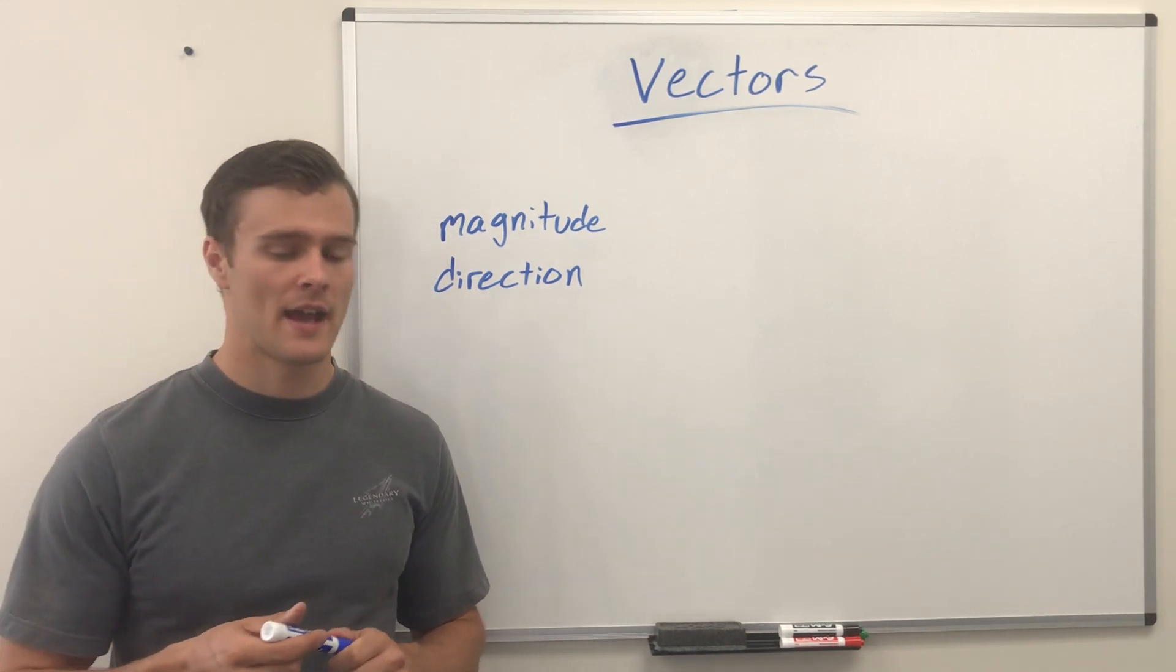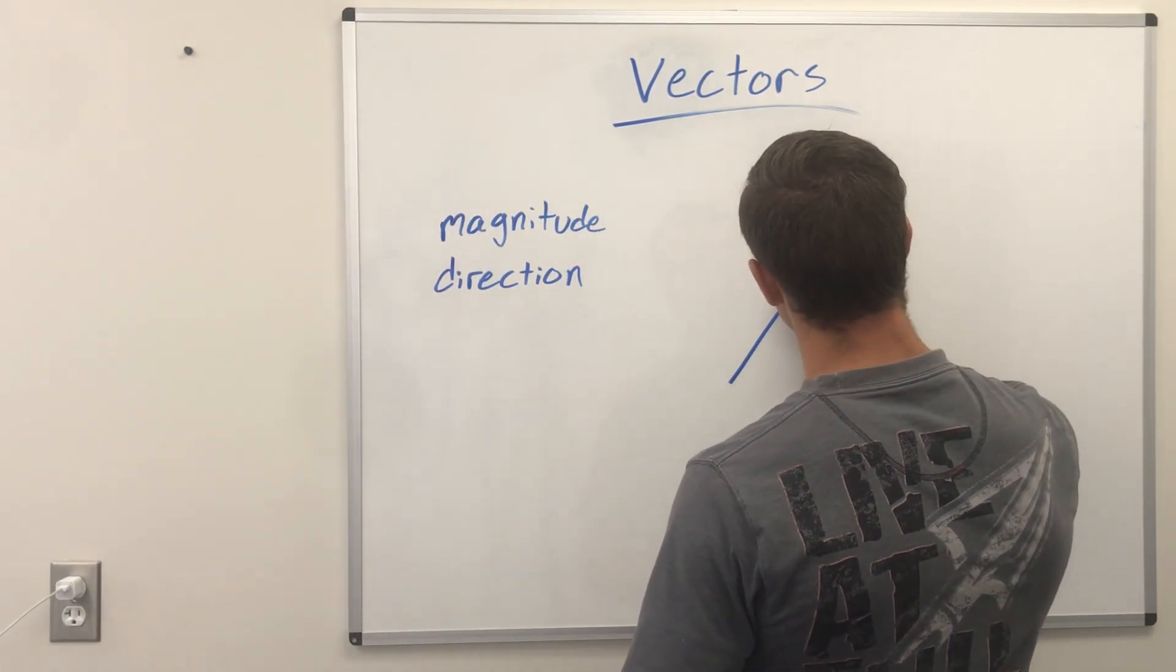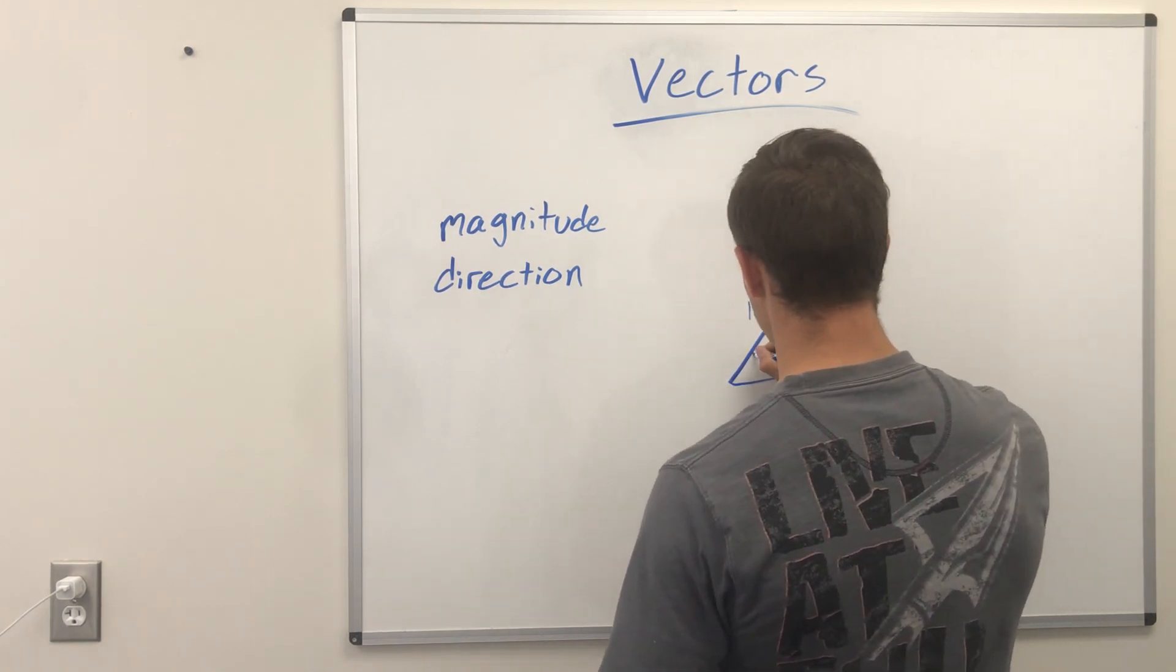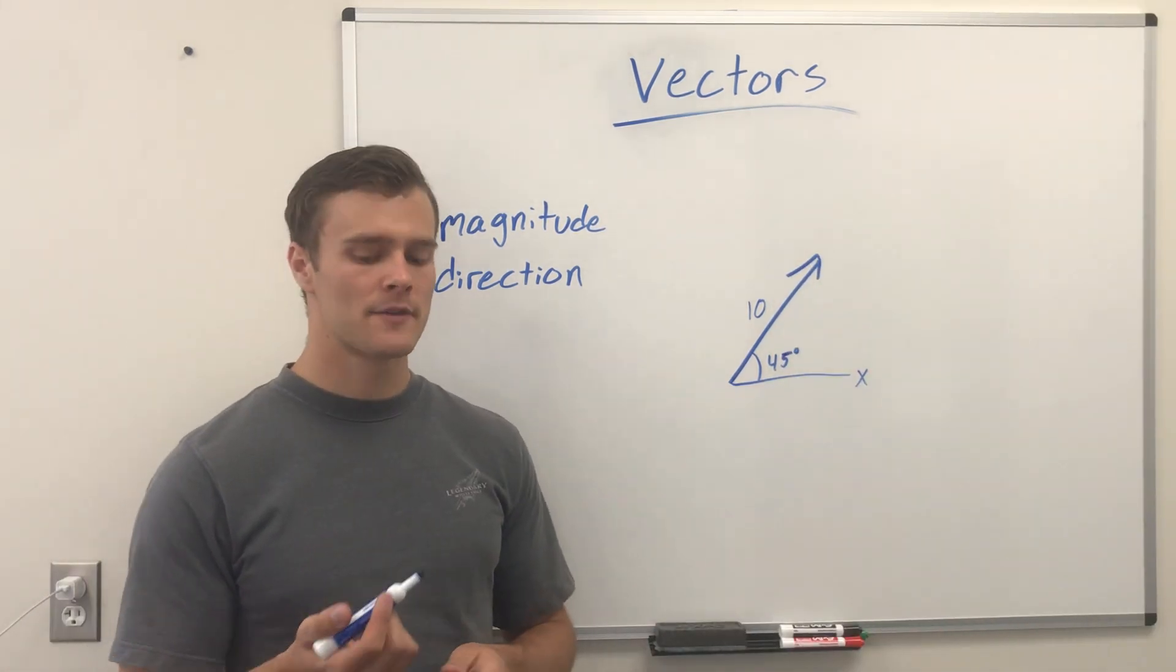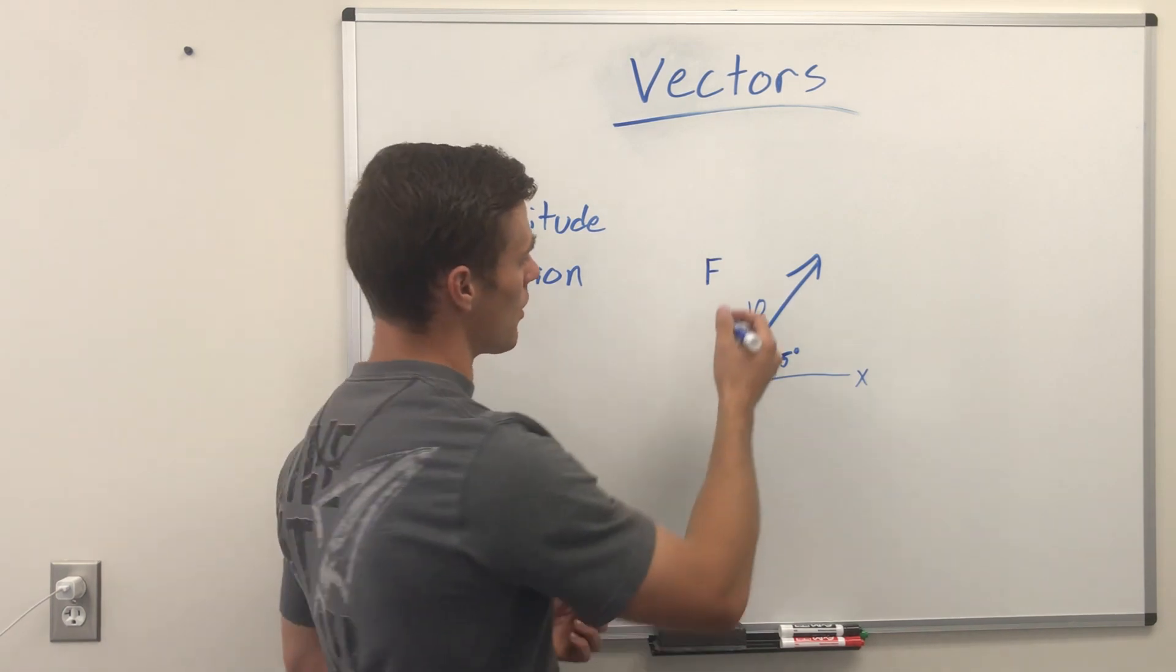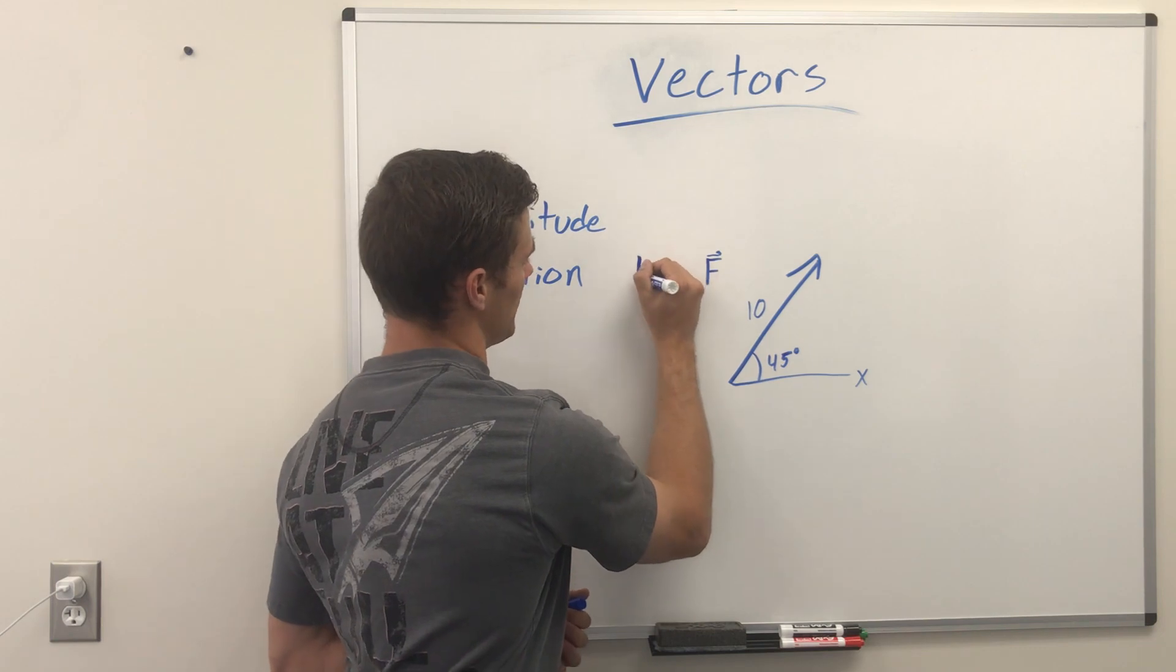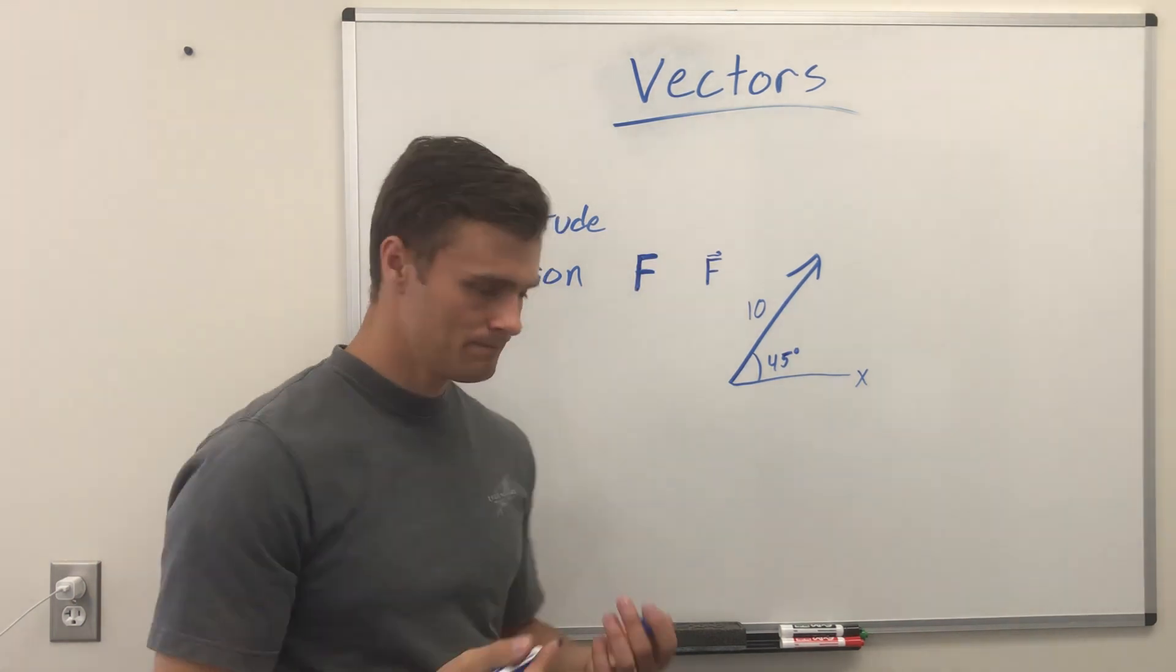We can draw vectors as arrows with the direction being the way it's pointing and the magnitude being how long the arrow is. We're going to say this is 10 units long and 45 degrees off the x-axis. We can call this vector F. The way you label vectors is you put an arrow over the top of the variable. That's how you do it usually handwritten. And in your book, you might see it being bolded.